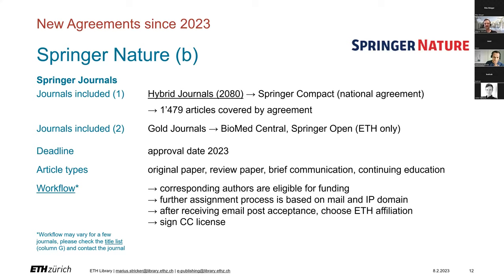With Springer Compact, the national agreement, APC for articles in hybrid journals are covered. Due to a specific agreement between ETH Library and Springer, you can also publish in Gold Journals, often BioMed Central and Springer Open Collections, without paying any APC. We recommend checking the journal title list on our documentation website before submitting, as for a few journals the workflow differs from the standardized setup procedure.